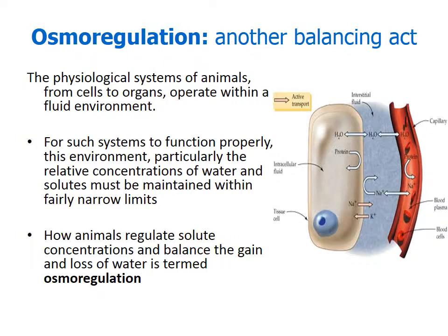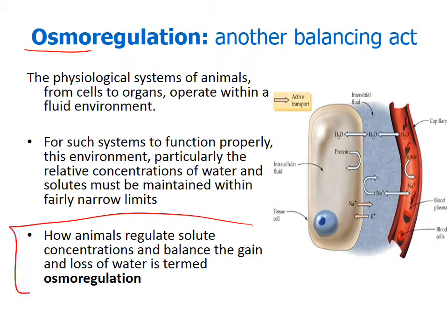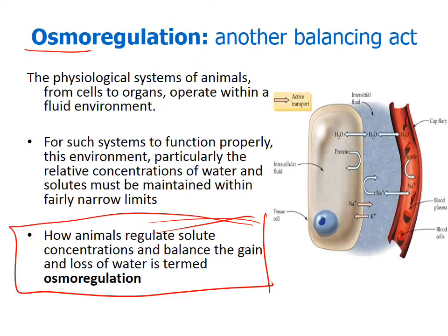Moving from temperature, we'll now look at osmoregulation — 'osmo' meaning water — balancing the amount of water inside an animal. The physiological systems of animals, from cells to organs, need a fluid environment to function properly. We need solutes maintaining their balance both internally and externally, allowing active transport, passive transport, and osmosis to occur. Osmoregulation is regulating solute concentrations and the balance of the gain and loss of water.